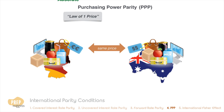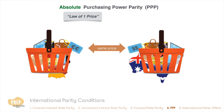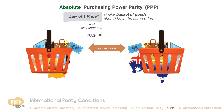The absolute version of PPP extends the law of one price to the basket of goods and services consumed in different countries. Absolute PPP requires only that the law of one price be correct on average for similar baskets of goods in each country. This implies that the equilibrium exchange rate between two countries is determined entirely by the ratio of their national price levels.